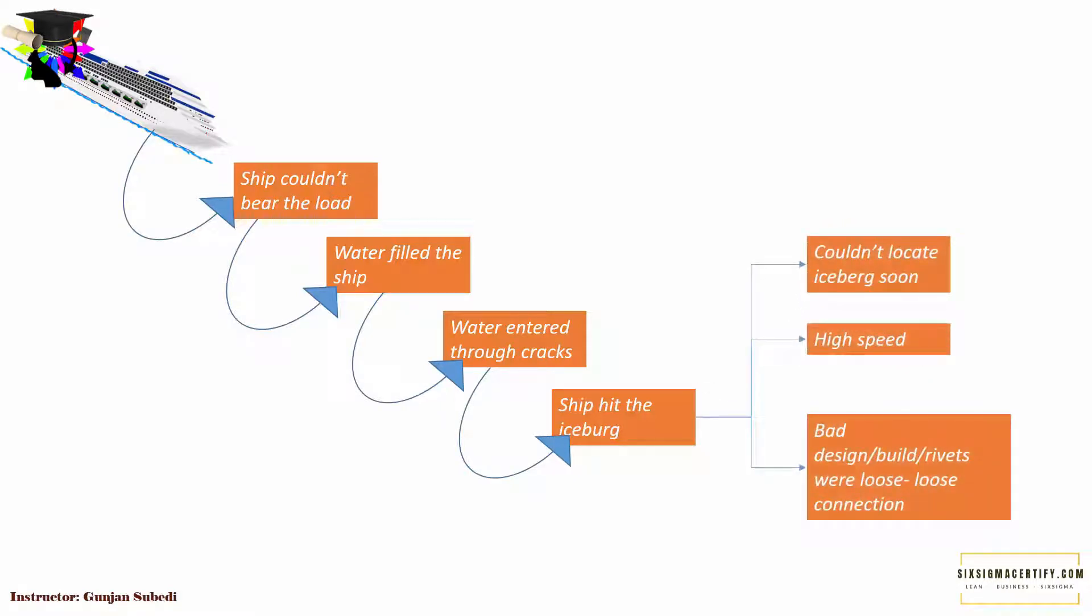Now at this point there could be multiple explanations. The ship could be too fast so they could not locate the iceberg soon. The ship was fast so the impact was high, creating a crack in the ship. And also there could be reasons such as bad design, bad build, etc.